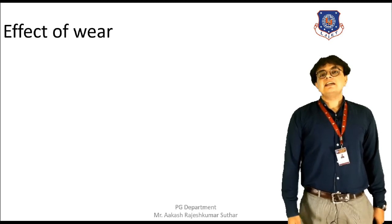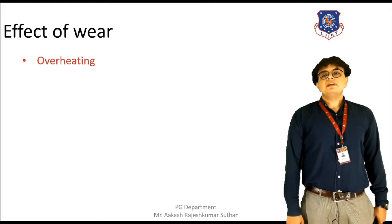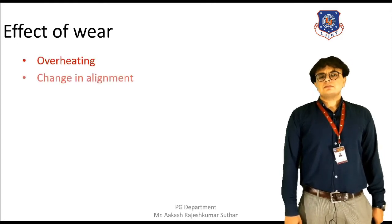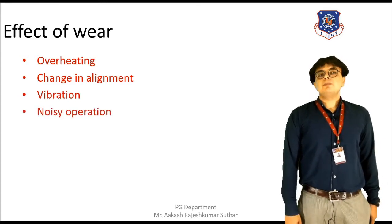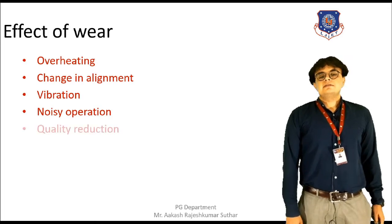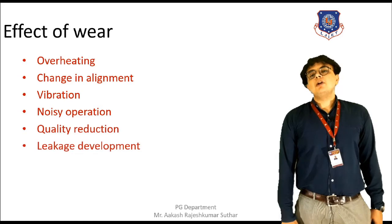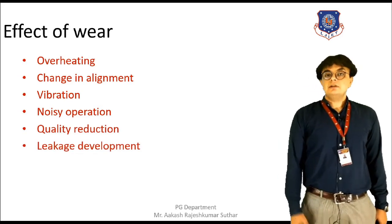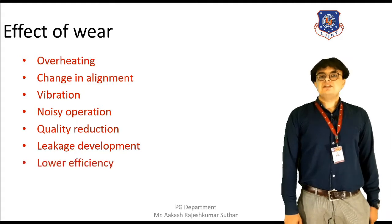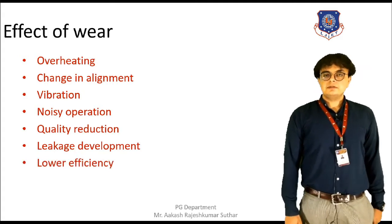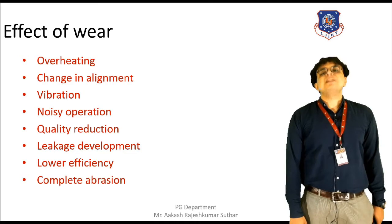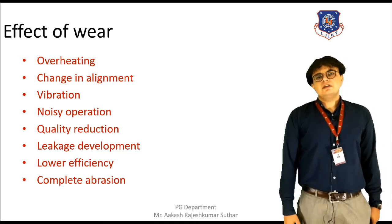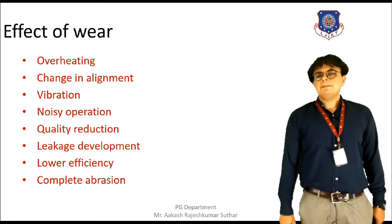What are the effects that a machine can get because of wear? First of all, it is overheating, then change in the alignment. Next is vibration that can be caused because of wear. Noisy operation can be caused because of wear. Next is quality reduction. Leakage development in the mechanical parts of the machine because of wear. Lower efficiency — the working efficiency can be reduced because of wear. Complete operation can be found because of wear. These are the list of the effects of wear on the machine. We will have a brief discussion on each.